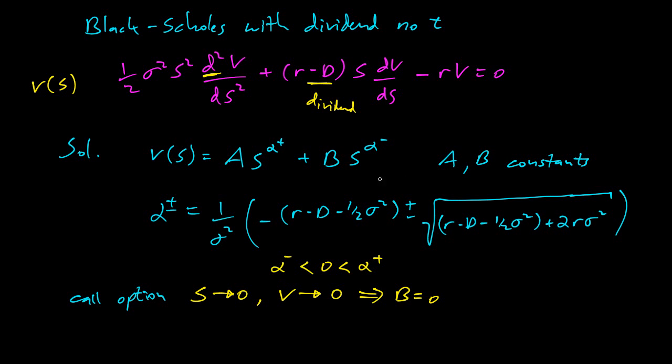So alpha plus is positive, and alpha minus is negative. And so as S goes to zero, S will become very small to a negative power. That's like dividing by a large power of S. As S gets really small, that's multiplying by larger and larger numbers. And so unless B is zero, this will go to infinity. So B has to be zero to make this, to make V go to zero as S gets small. So B has to be zero.